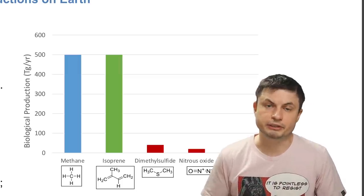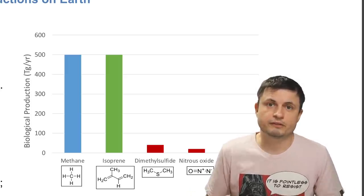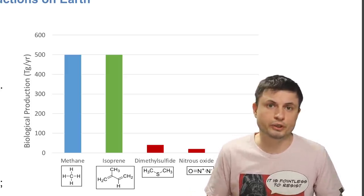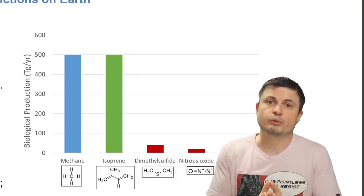And considering the fact that there's just as much isoprene on the planet as there's methane, as you see in this particular graph from the paper, I really don't think that this is a far-fetched assumption. For all we know, maybe even on earlier Earth, isoprene could have formed some sort of a strange liquid on the surface.